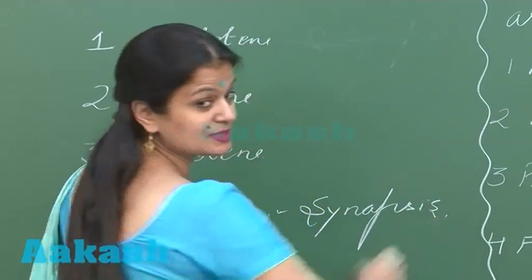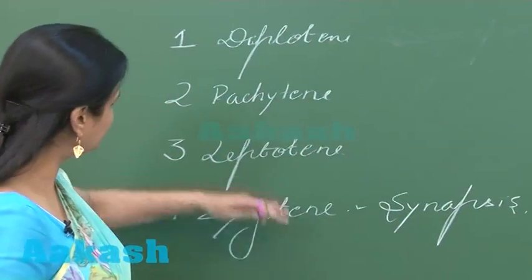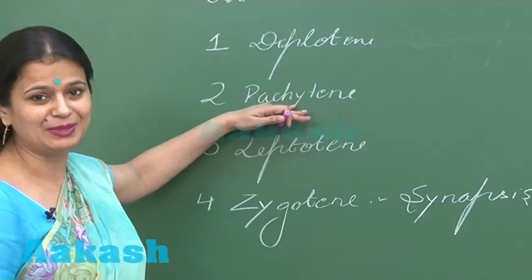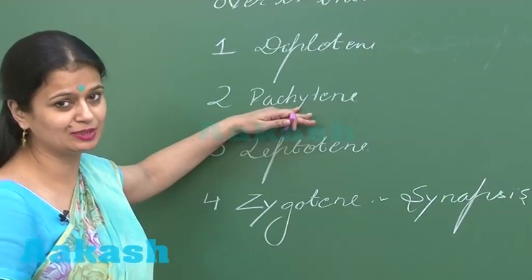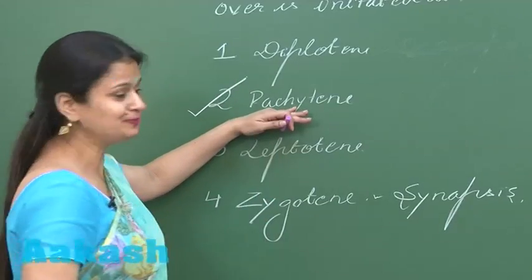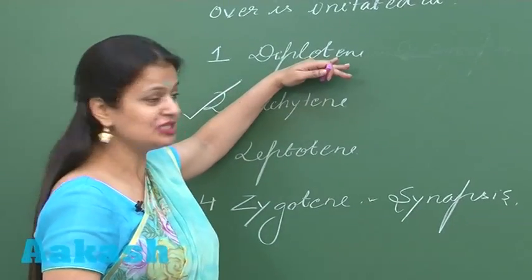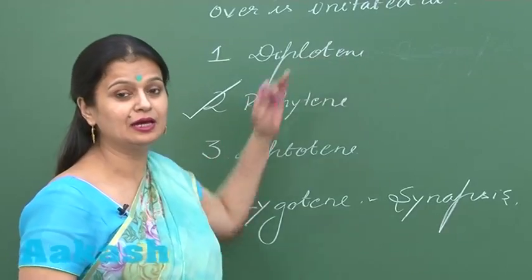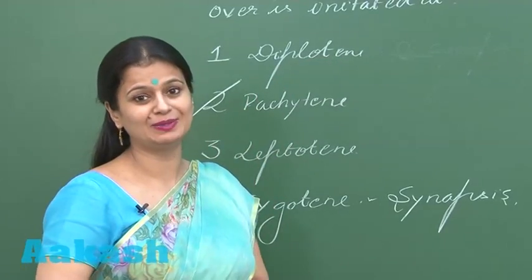After zygotene, then it's pachytene. Pachytene is the stage where crossing over occurs, so this is the right option. Then after pachytene, it's diplotene, and in diplotene, the synaptonemal complex dissolves.